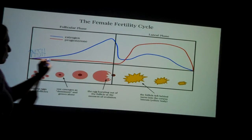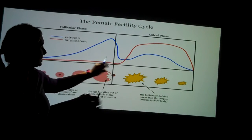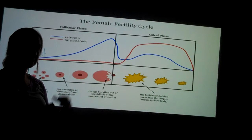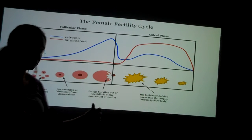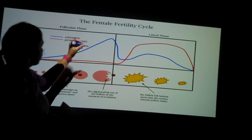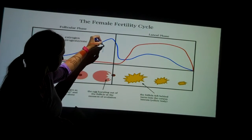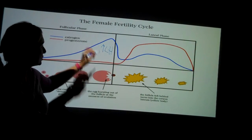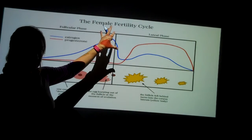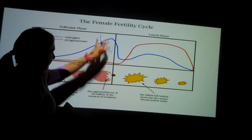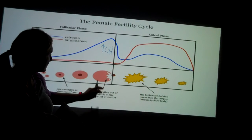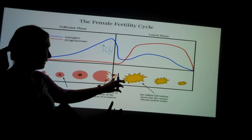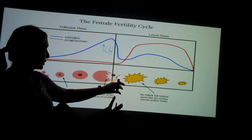Right before ovulation, which occurs approximately 14 days prior to the beginning of the next menstrual cycle, you'll see a surge in luteinizing hormone, or LH, and a surge of estrogen. And then ovulation takes place, so that follicle will rupture and release that mature egg.